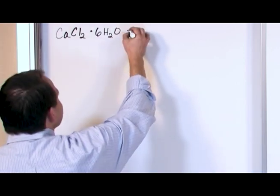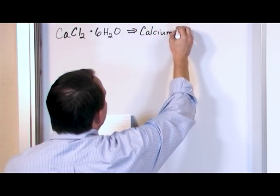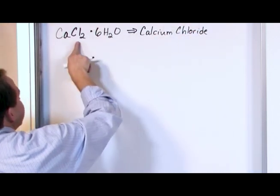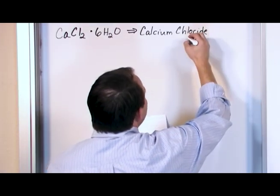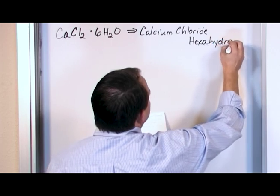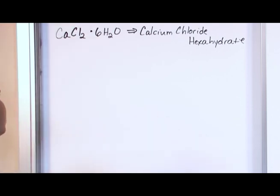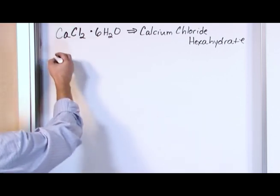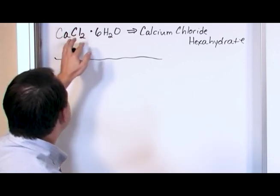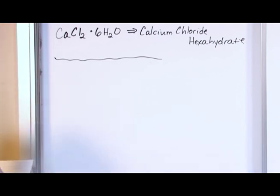The way that you would name this would be calcium chloride hexahydrate. The hexa means six, the hydrate means water, that's all it means. So this is very important, you might be asked this on an exam or if you practice chemistry in the future you might just need to know this. Calcium chloride hexahydrate means six water molecules tied up in there.